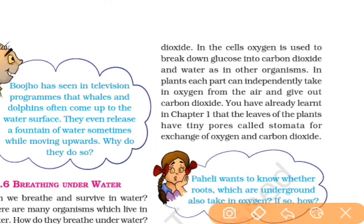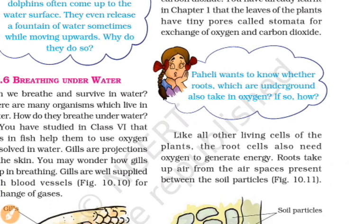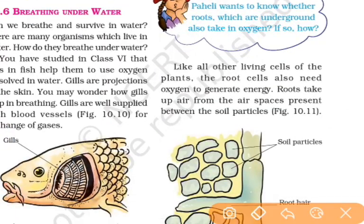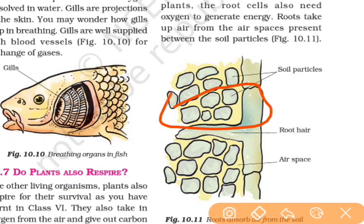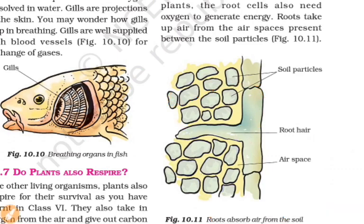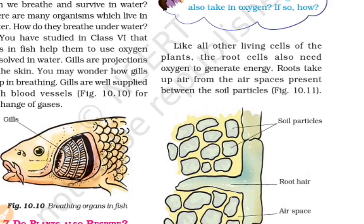In plants, oxygen is added to glucose and carbon dioxide and water are released. Leaves have small openings called stomata for gas exchange. The roots absorb oxygen from the soil.